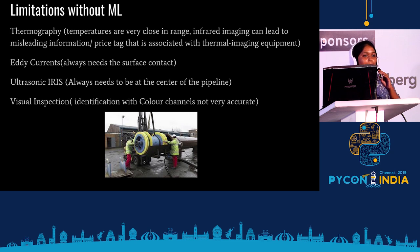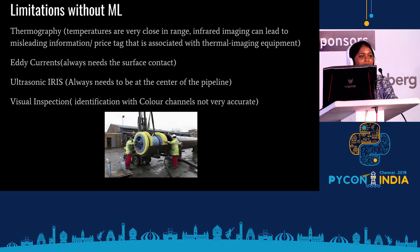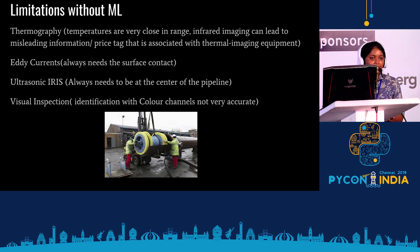Without machine learning, we mostly used sensors — thermographic sensors, eddy current sensors. Thermography works within a particular range, which is problematic because it can lead to misleading information if temperature is not maintained. Eddy current sensors also had limitations. Sensors, regardless of type, give certain limitations to these industries.